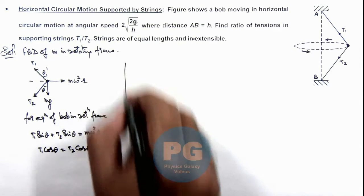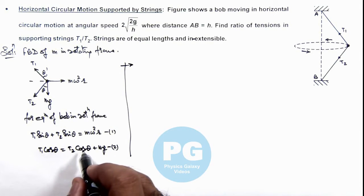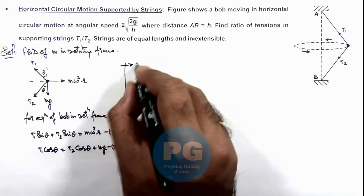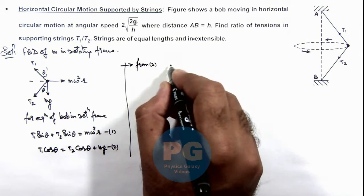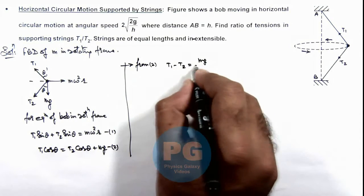Here if we continue, then we can substitute the values of sinθ and cosθ. From equation 2, we can write: T₁ - T₂ = mg/cosθ.